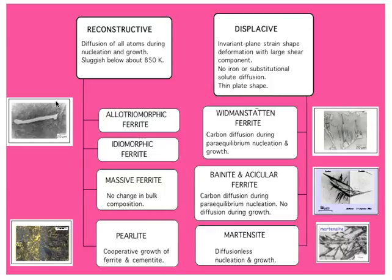We have covered a large number of transformations: the displacive transformations, Widmanstätten ferrite, bainite and acicular ferrite, martensite, and allotriomorphic ferrite. We will deal with pearlite now.